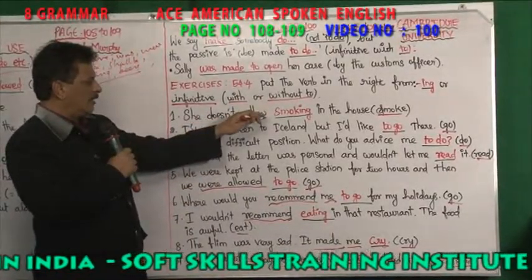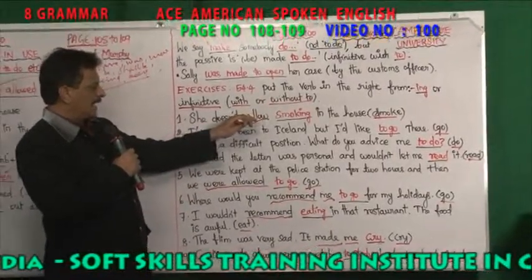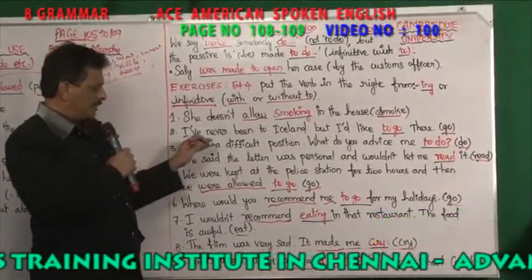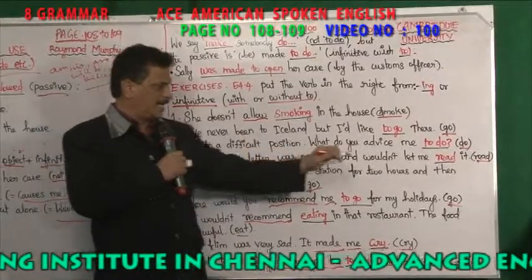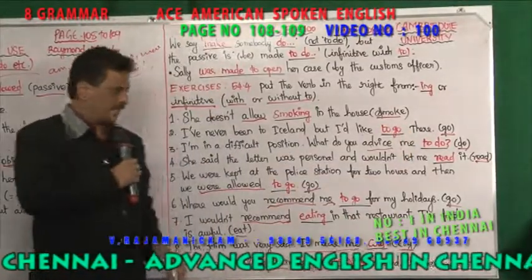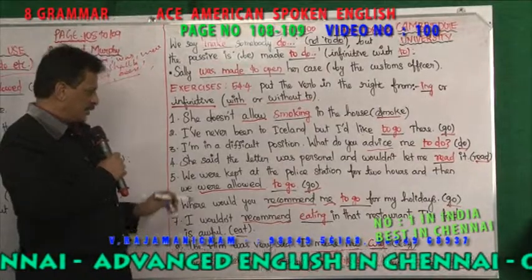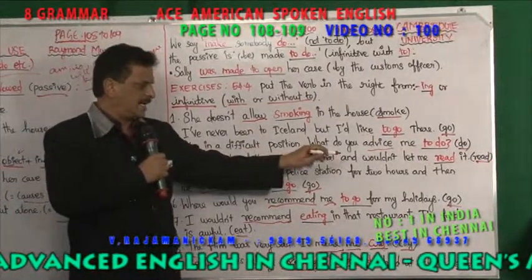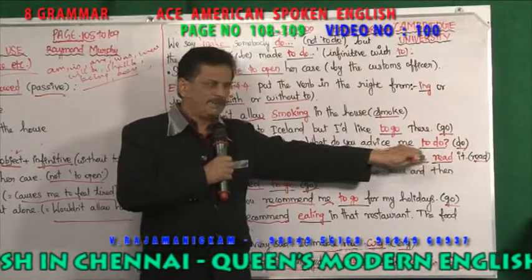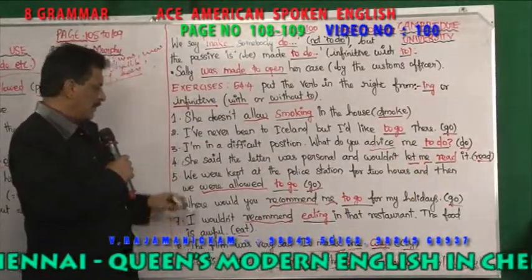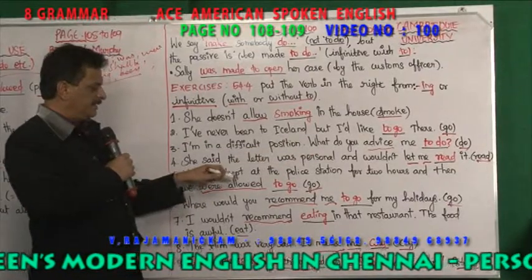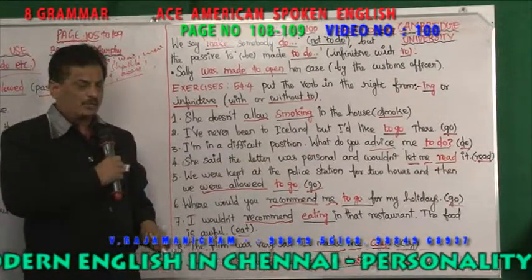Dear friends, summary: after 'allow' without object, use the gerund — 'smoking'. After 'advise' with object 'me', use infinitive 'to do'. After 'let me', use present tense verb only — 'read it', not 'to read'. 'We were allowed to go' is passive. After 'recommend' with object, use 'to go'; without object, use gerund 'eating'. Carol's parents encouraged her to study.